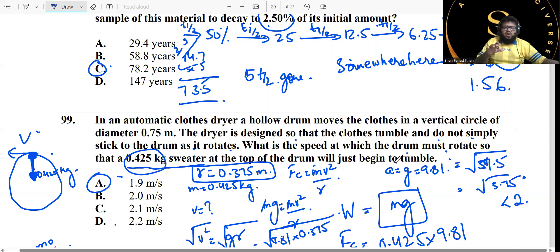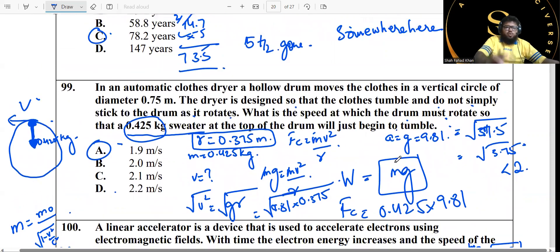Just begin to tumble actually means that there is no other influence over here, it's just the weight that is responsible and that is actually acting as a centripetal force. So you just equate the two: weight equals the centripetal force. mg equals mv squared over r. The m's cancel out, you are just left with v equals square root of gr.